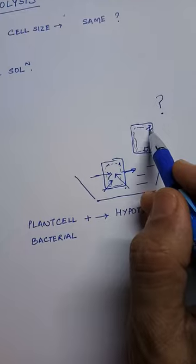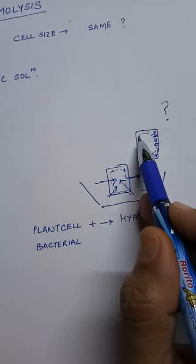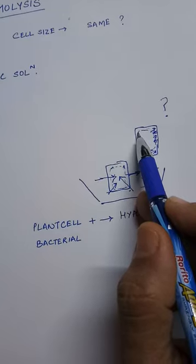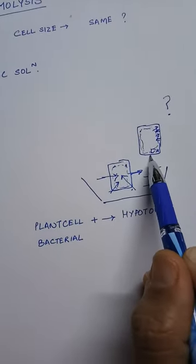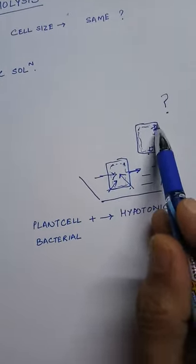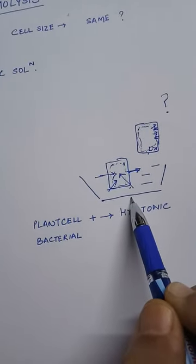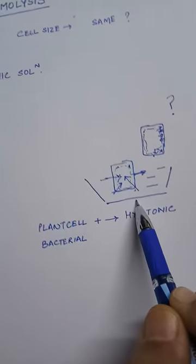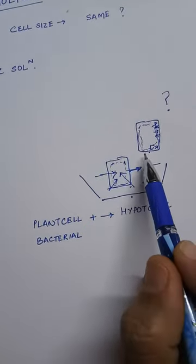Cell wall in turn will exert an equal and opposite pressure towards these cytoplasmic contents. And what is the advantage of this? That cells do not burst even in highly dilute hypotonic solution.